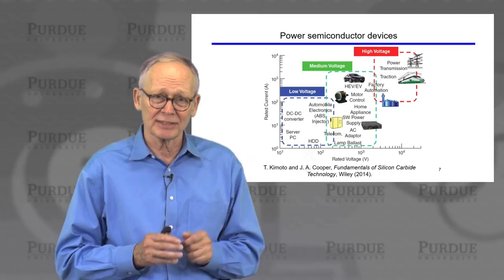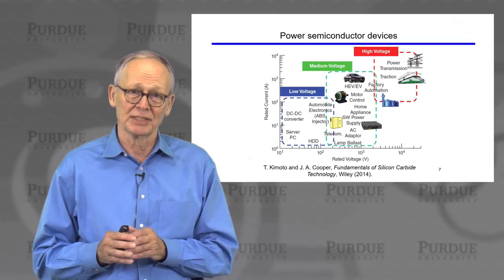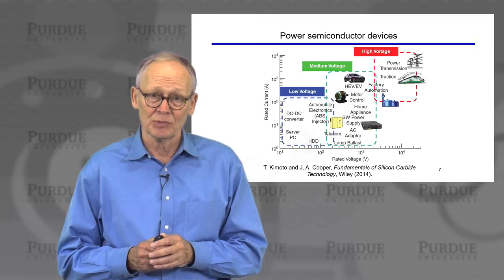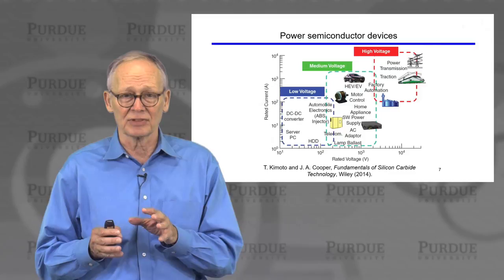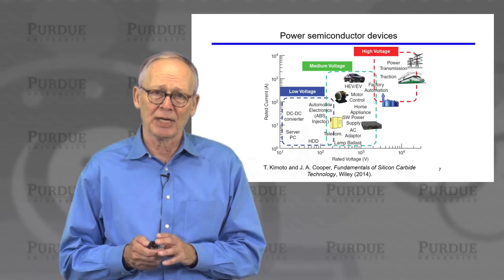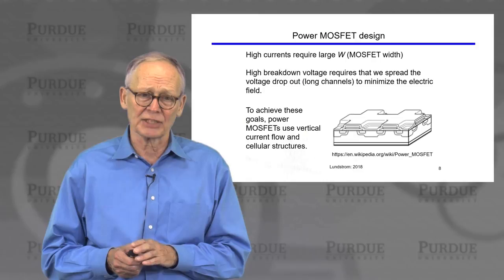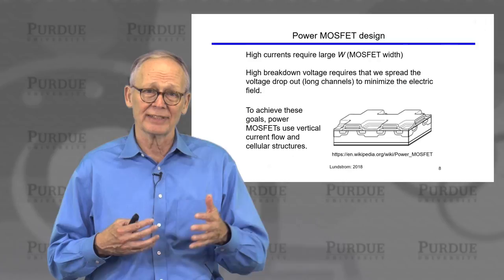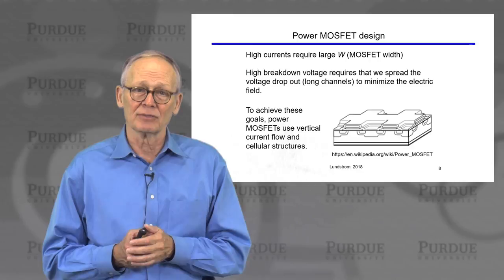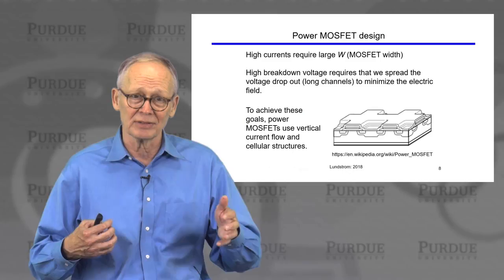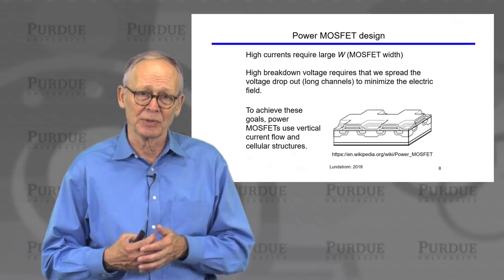We spent a lot of time talking about digital applications and a little bit of time talking about analog applications, but there are other applications for transistors. One important application is in power electronics, where a MOSFET is operated as a switch. For power electronics, we need high currents, which means we need MOSFETs that are very wide — but we don't want to take up a lot of semiconductor area because that's expensive. We need high breakdown voltages, which means we need to spread the voltage out across a long distance to lower the electric fields so that the semiconductor doesn't break down.